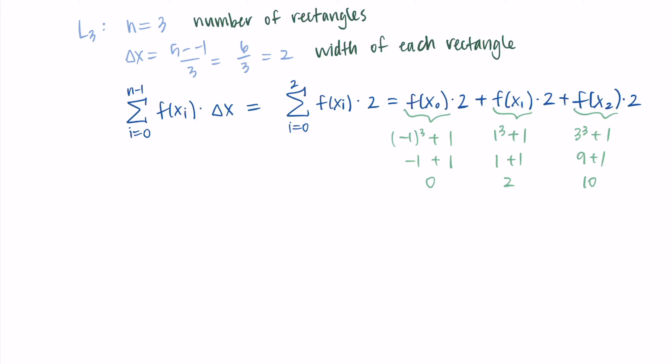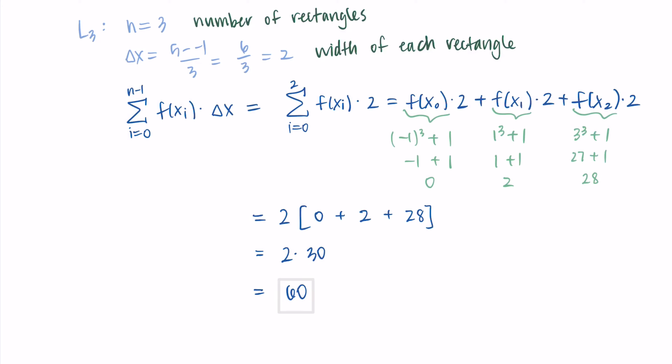Now I just need to simplify. All the function values are being multiplied by 2, so I factor that out: 2 × (0 + 2 + 28) = 2 × 30 = 60. That is my left Riemann sum — the approximation of the area under x³ + 1 using left endpoints for our rectangles.